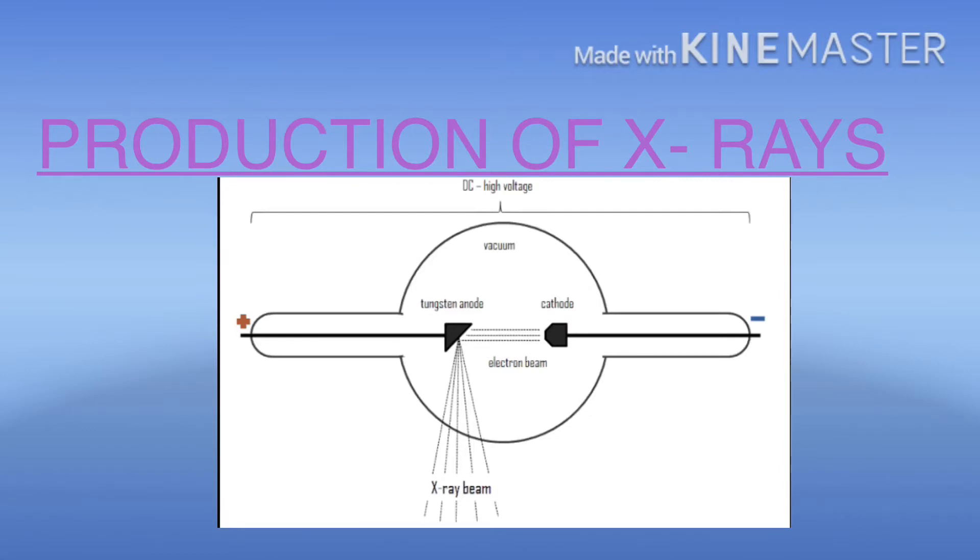How X-rays are produced? X-rays are produced due to sudden deceleration of fast moving electrons when they collide and interact with the target anode. And these fast moving electrons are driven across to the target when thousands of kilovolts are applied.